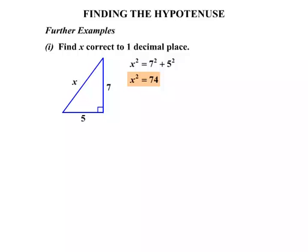Now at this stage, x squared equals 74, well, it's not going to be a whole number. As in the previous lesson, we could generally do them in our head. We're going to need the calculator now.